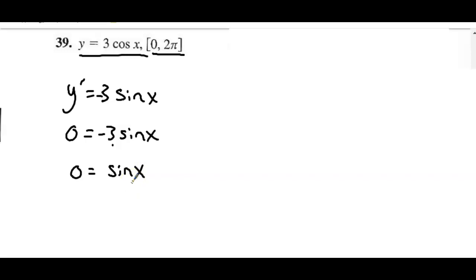So, in other words, on the unit circle, where does y equal 0? Because sine is the y value. y equals 0 here and here, which are the values 0 and pi.